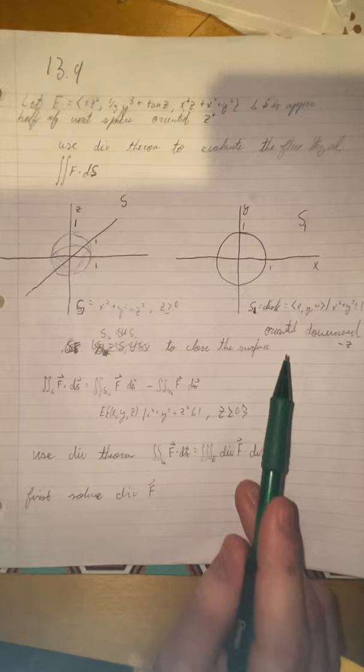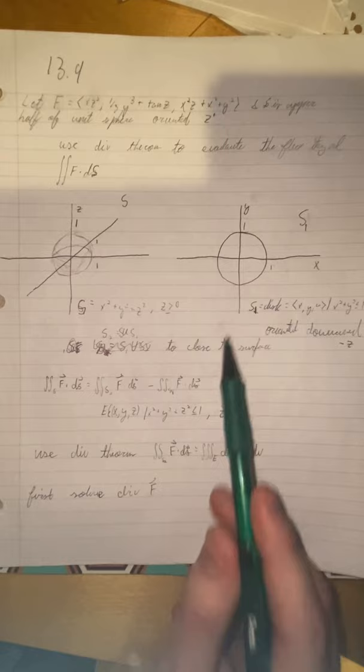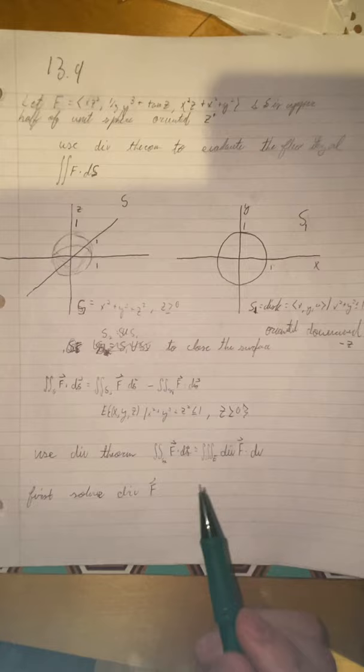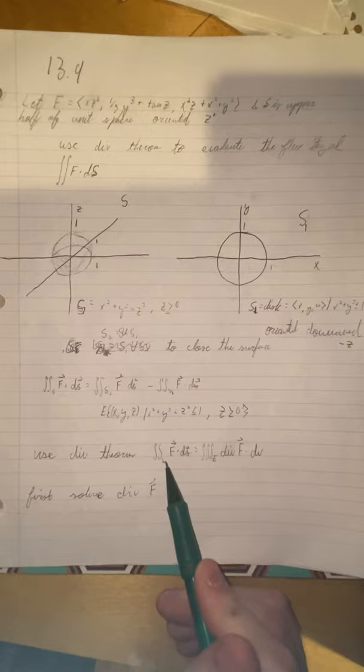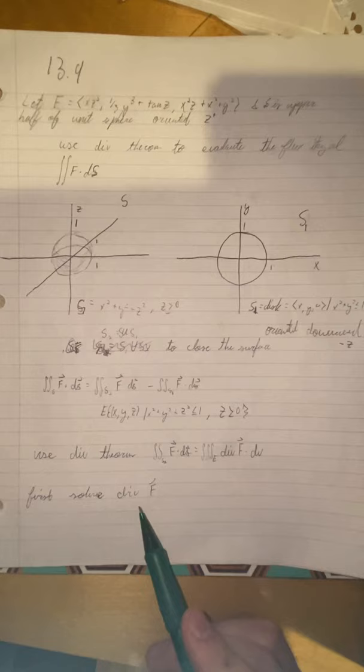So then to solve for f dot ds, which is what we're searching for, you're going to have the closed surface, which is s2 f dot ds, minus the surface we created, f dot ds there. So first, we have to find f dot ds of s2, which is equal to divergence f dot dv over that closed surface. So first we have to solve for div f.